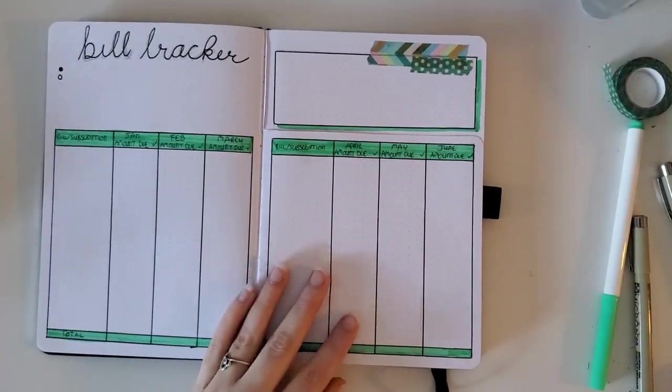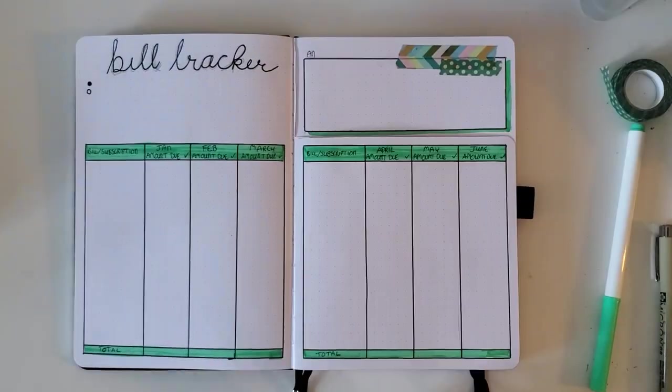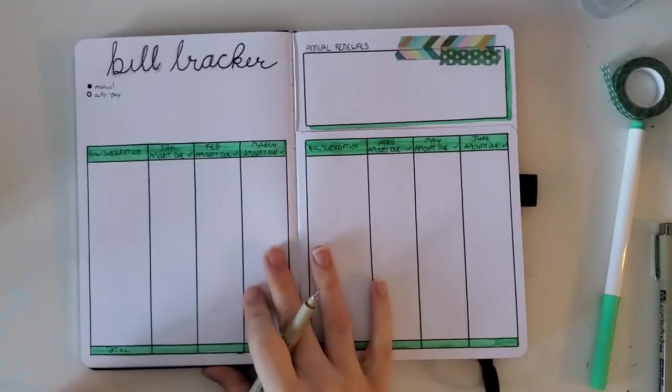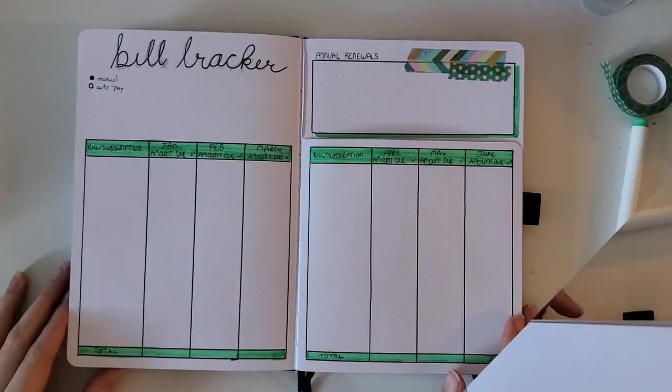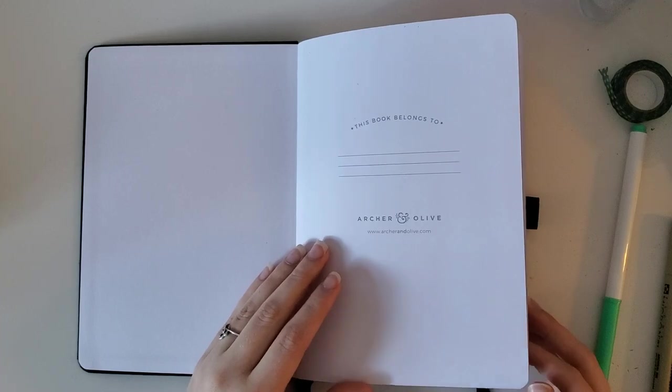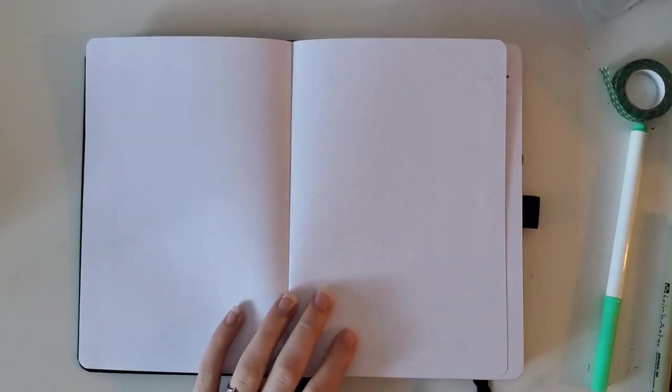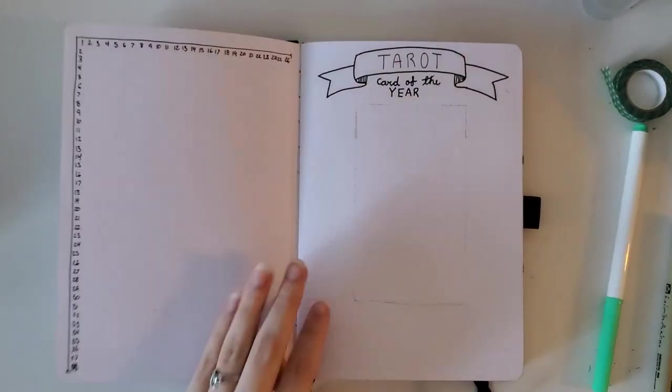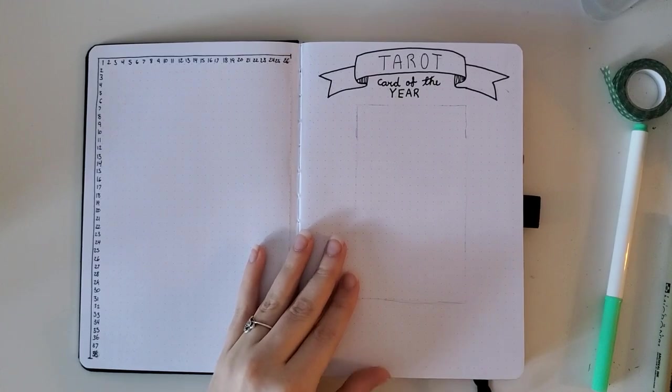So I added a tiny bit of washi tape and that was about it. And here is a final flip through. I did end up adding an index header on that first page there.